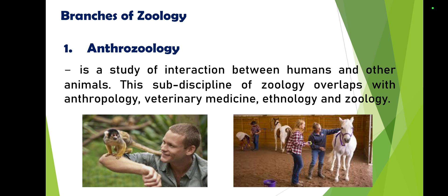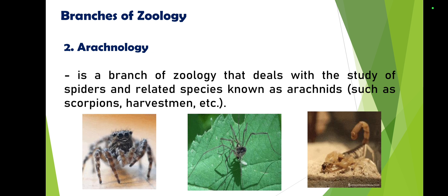The very first branch of zoology is anthrozoology — the study of interaction between humans and other animals. Its subdisciplines include anthropology, veterinary medicine, ethnology, and zoology itself. When we say anthrozoology, it is specifically the study of the interaction between humans and other animals.